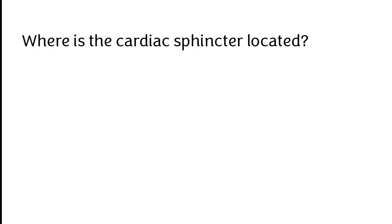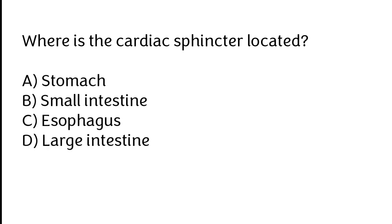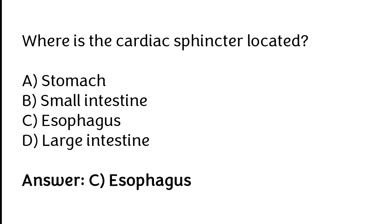Where is the cardiac sphincter located? Stomach, small intestine, esophagus, large intestine. The correct answer is option C. The cardiac sphincter is located in the esophagus.